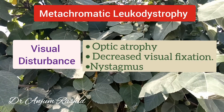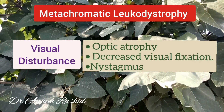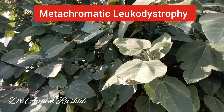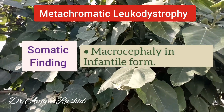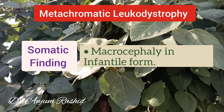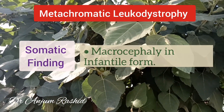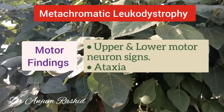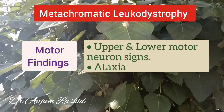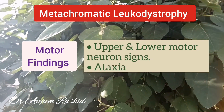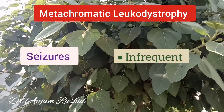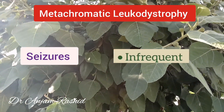Regarding visual disturbance, there is optic atrophy, which can lead to decreased visual fixation, and there may be nystagmus. The somatic finding is usually macrocephaly in the infantile form. Motor findings include both upper and lower motor neuron lesion signs, as well as ataxia. Seizures are infrequent in this neurodegenerative disorder.